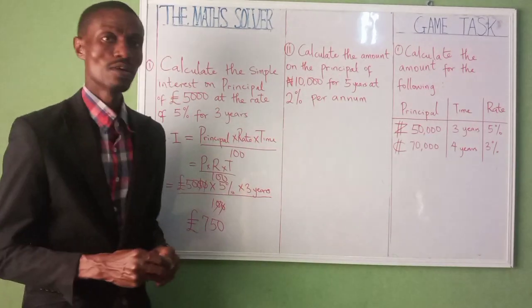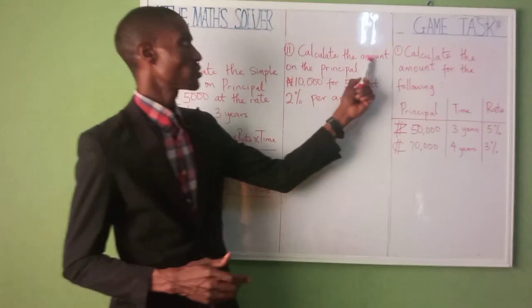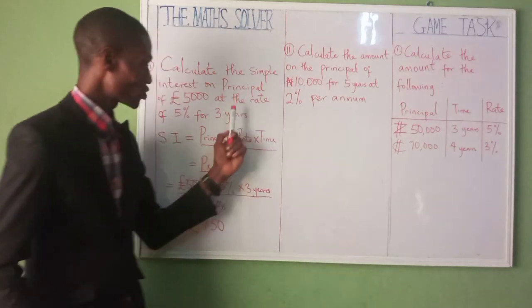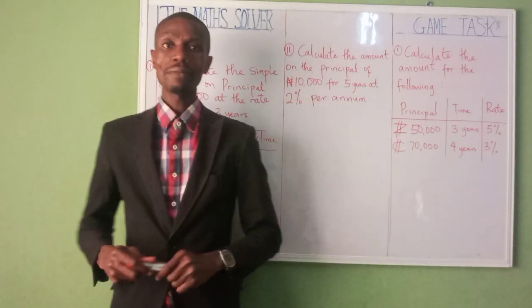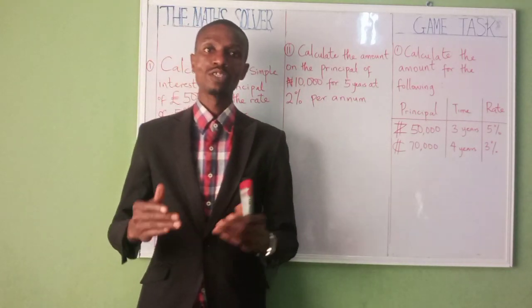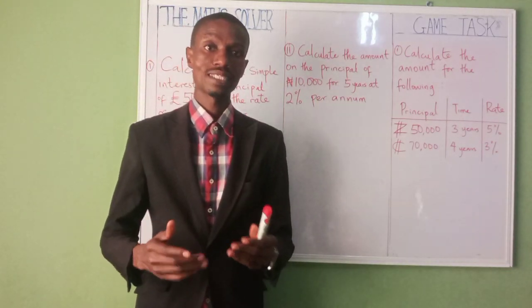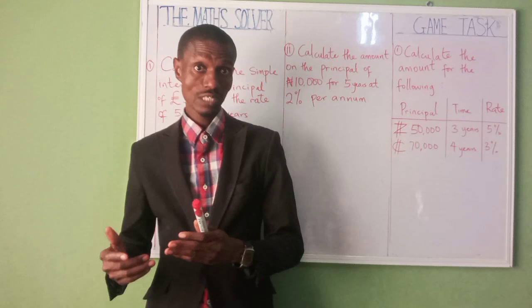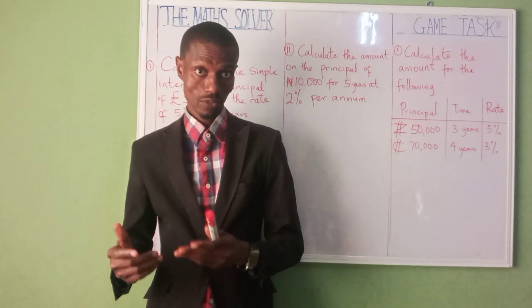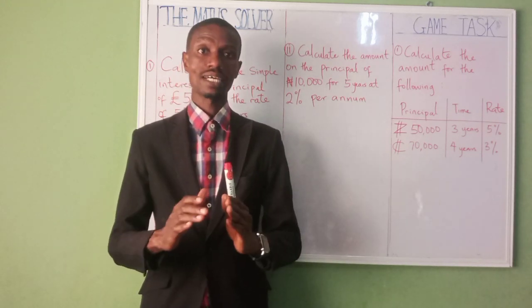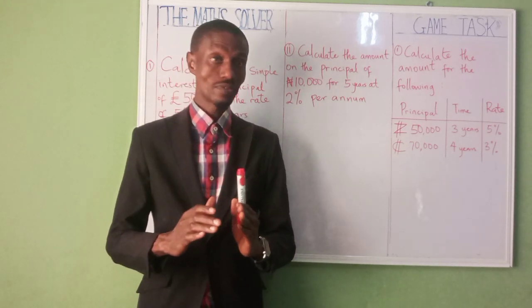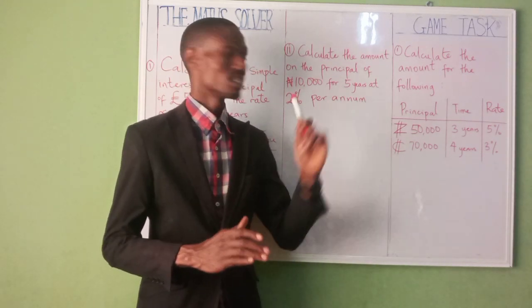Let's now calculate this. Now, talking of amount — this was simple interest; this one is amount. Amount means you first calculate the simple interest, then add it together with the principal.